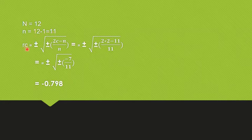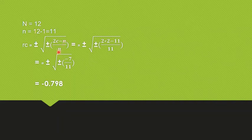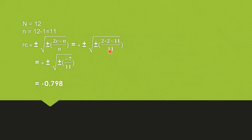Now I am going to calculate Rc. The Coefficient of Concurrent Deviation Rc is equal to plus or minus the square root of plus or minus (2c minus n) divided by n, which equals plus or minus the square root of plus or minus (2 into 2 minus 11) divided by 11.